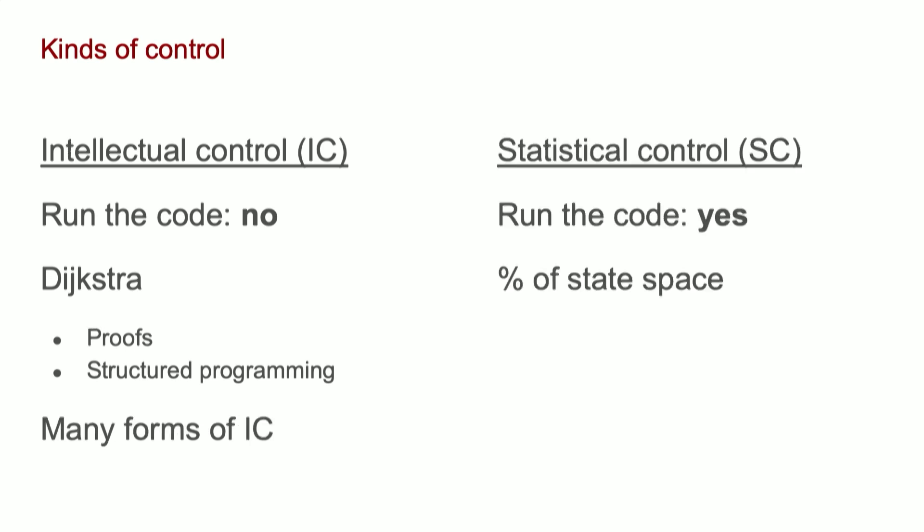Let me contrast intellectual control with statistical control. With statistical control, you run the code once or many times, and because you run it in representative cases, you give yourself confidence — you ran it, it does what you expect. So with these two things, you can see these are two different ways of getting to the same answer: building code that does what you expect.